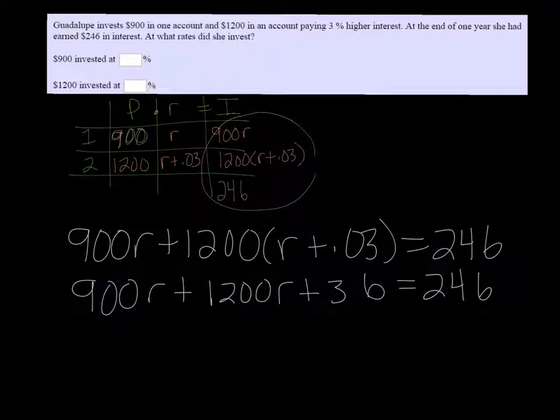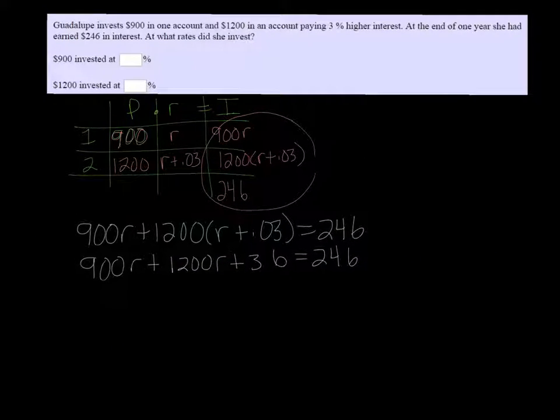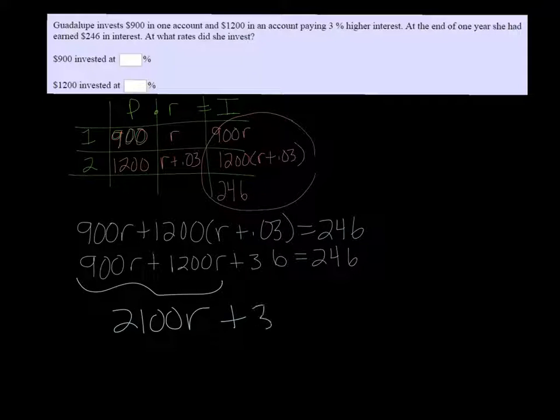Let's make a little more space here. All right, combining the two R's, it's 2,100R plus 36 equals 246.